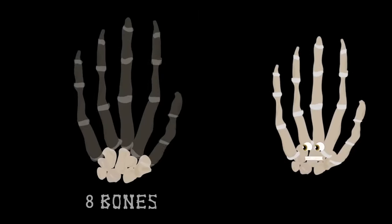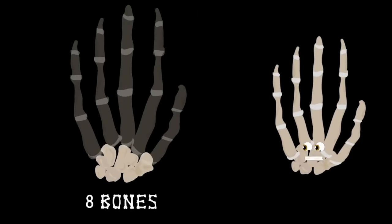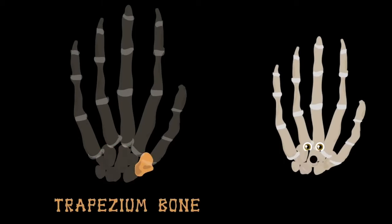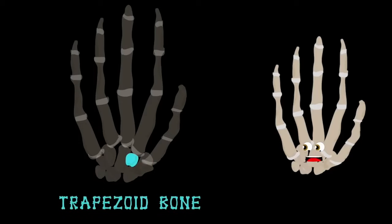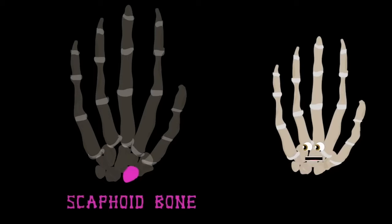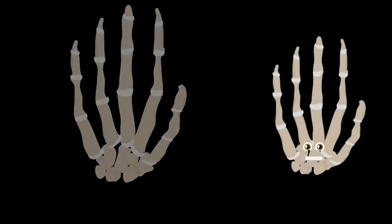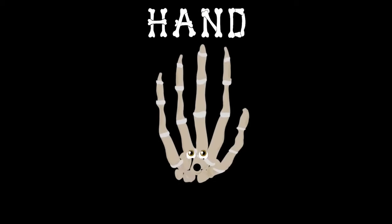Let's look at the eight bones that connect the hand to your arm — this group is called the carpals. The trapezium bone is at the base of your thumb; it's a small but important bone. The trapezoid bone is shaped like a wedge. The scaphoid bone sits on the wrist's tight edge. The capitate bone is in the middle of your wrist — the fourth bone on this list.